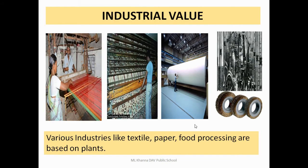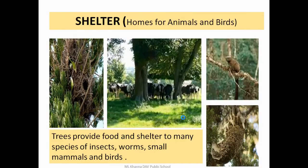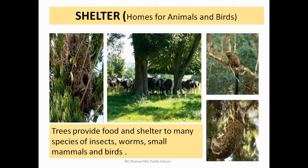Trees are also helpful in industrial value. They have great value in industries like textile, paper, or processing other plant-based things. Trees also provide food and shelter to many species of insects, worms, small mammals, and birds, as is clear from the pictures.